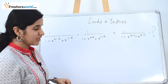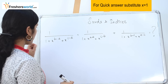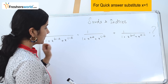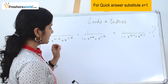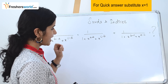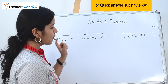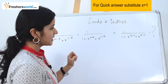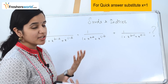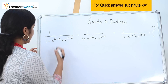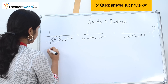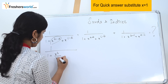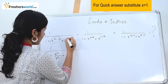The next question is: 1 divided by (1 plus x power b minus a plus x power c minus a) plus 1 divided by (1 plus x power a minus b plus x power c minus b) plus 1 divided by (1 plus x power b minus c plus x power a minus c) is equal to what? Let's start solving. This can be rewritten by taking x power a in the numerator of the first term.